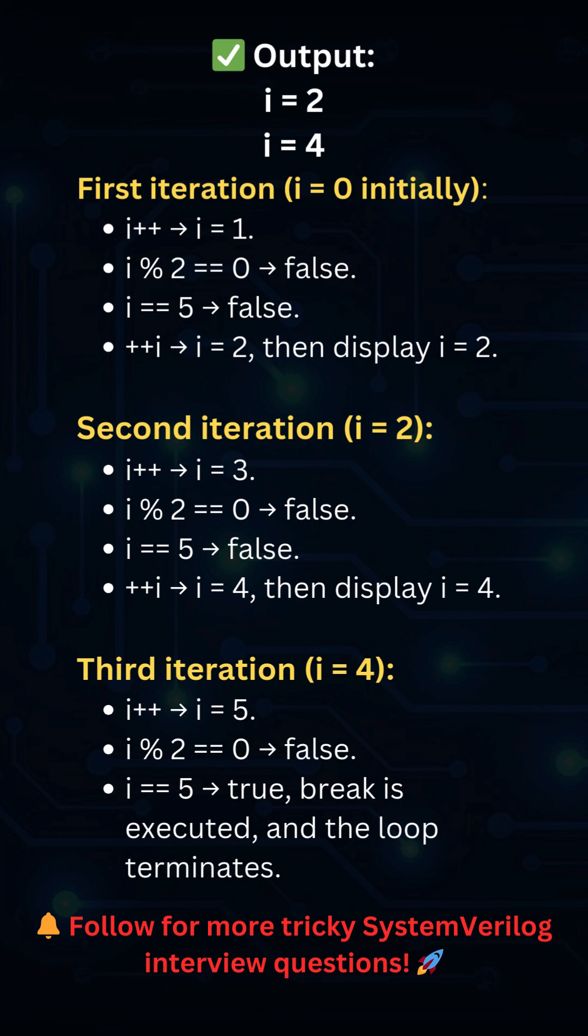Second iteration: i++ makes i = 3. It's still odd so the loop continues. i == 5 is false. Then ++i makes i = 4 and it's displayed.